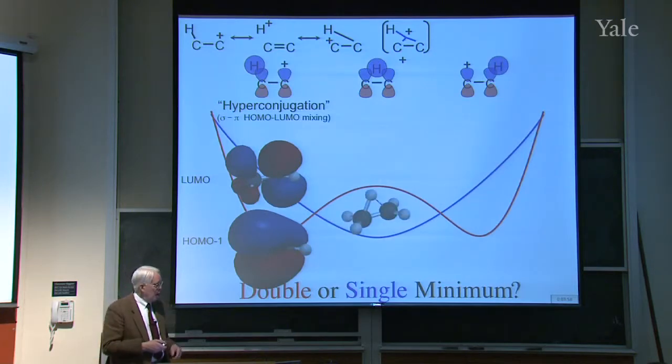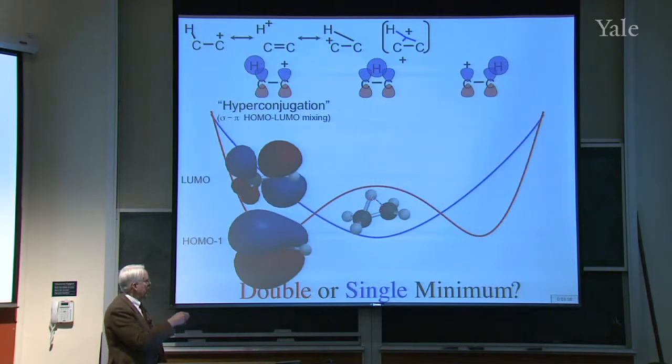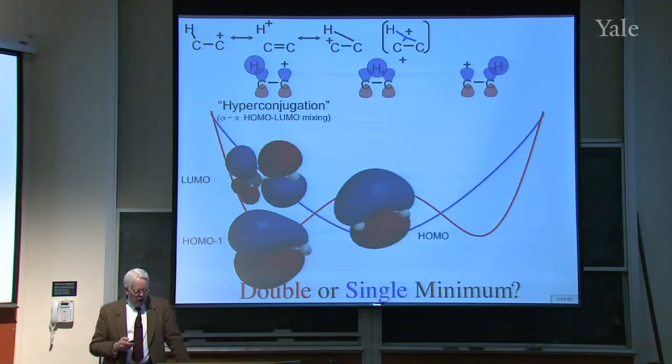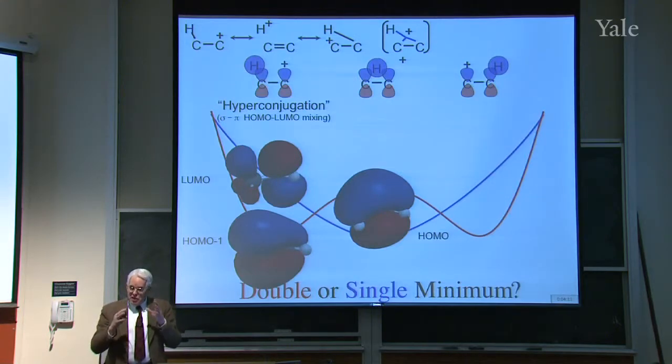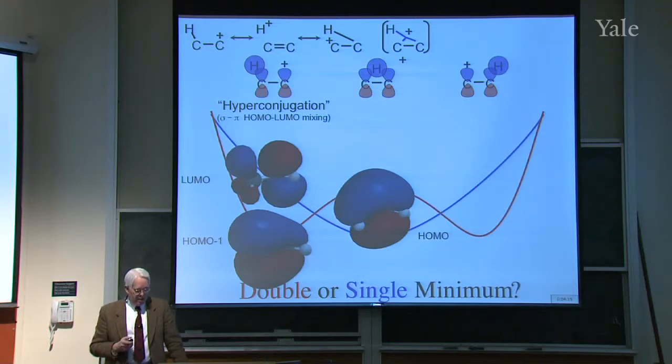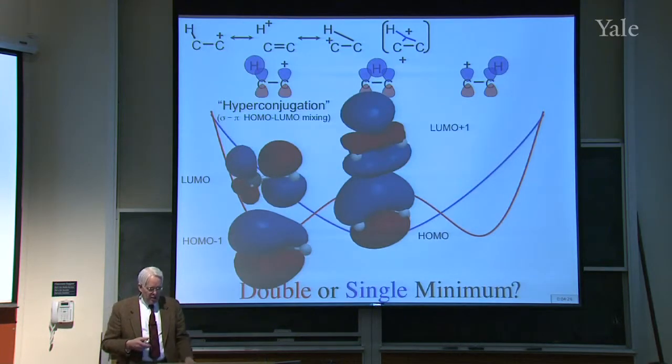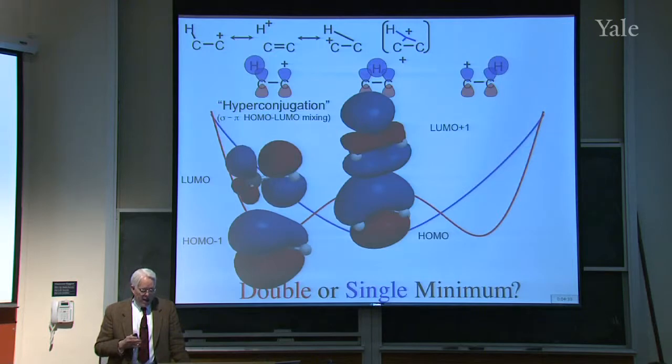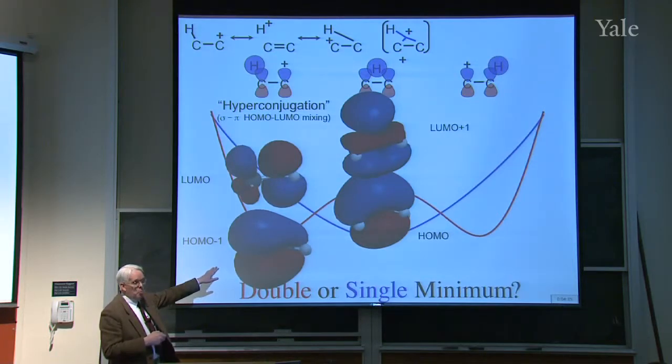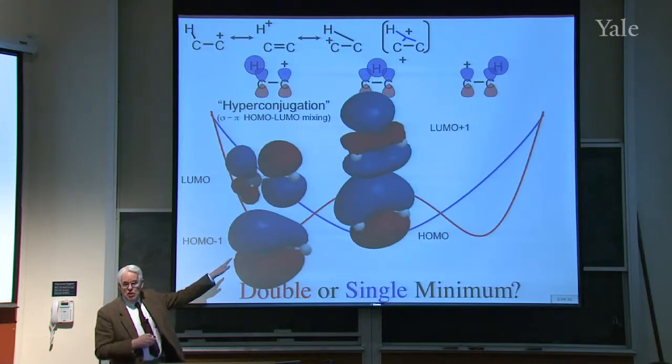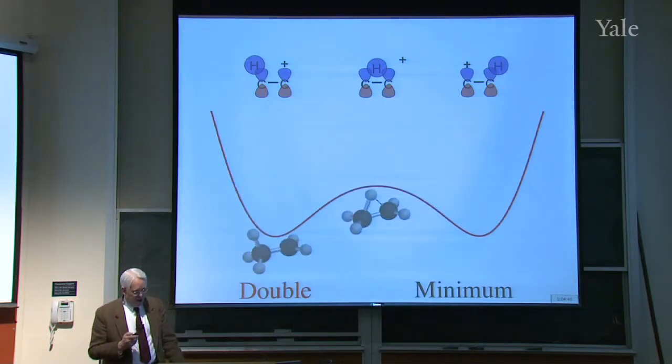If we go to the bridge structure, which is actually symmetrically bridged, and look at the HOMO, you can see it's symmetrical. It's the pi orbital distorted because the hydrogen orbital is mixed with it. The LUMO is the antibonding combination. In this calculation, it's a double minimum.